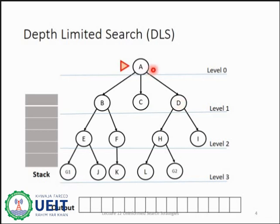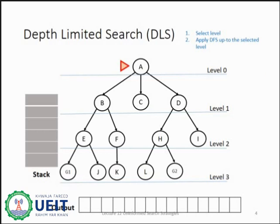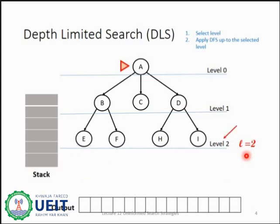In this example state space, we have root node A and two goal nodes G1 and G2. This tree has total four levels: 0, 1, 2, 3. Root node is always at level 0. The algorithm starts by selecting L — we have to select a level and then apply DFS up to the selected level. Let's select L equal to 2 for this example. Once the level is selected, nodes after that selected level are no more considered part of the search, and thus the tree is only considered up to the selected level, which prunes the tree. Nodes after level 2 would be considered as if they do not have any children.